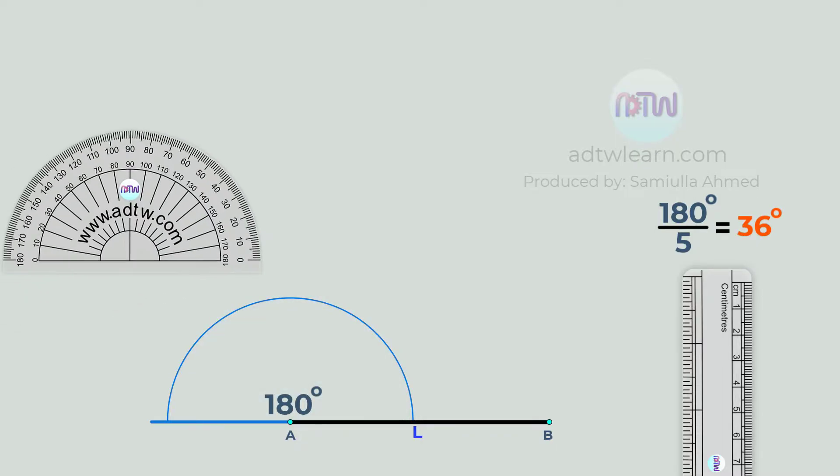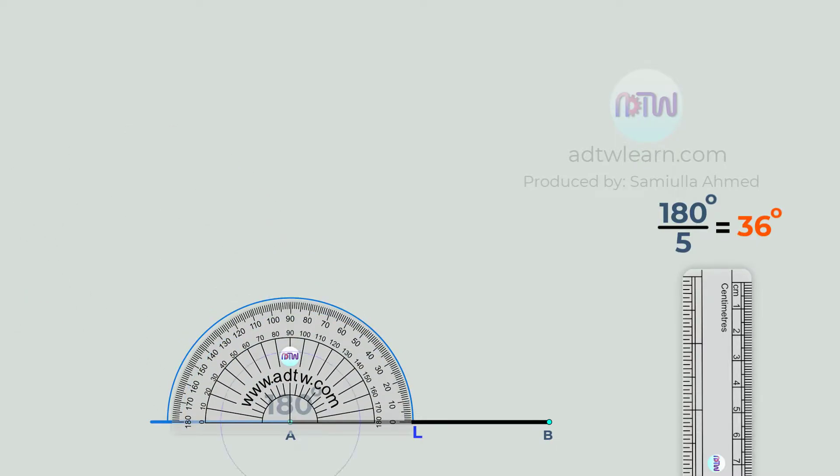Take a protractor and place it here such that its center coincides with point A, and mark 36 degrees.